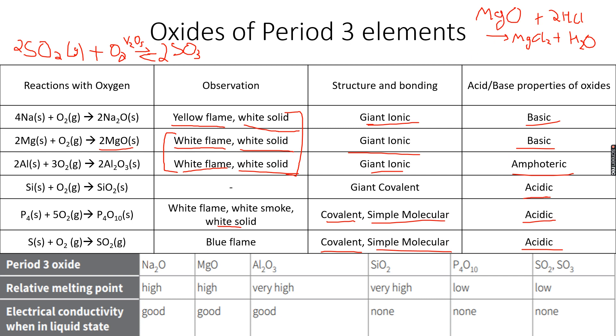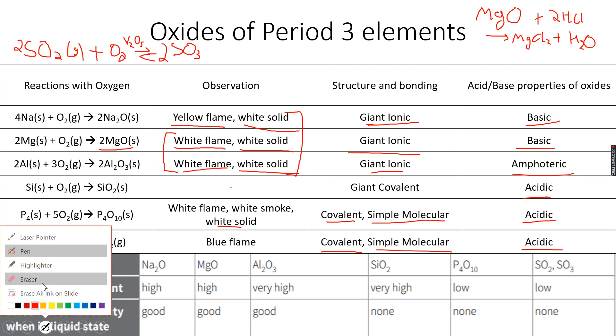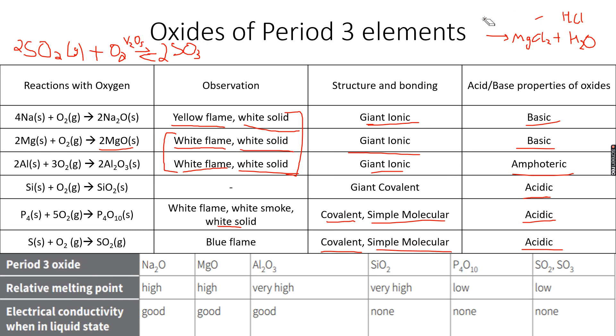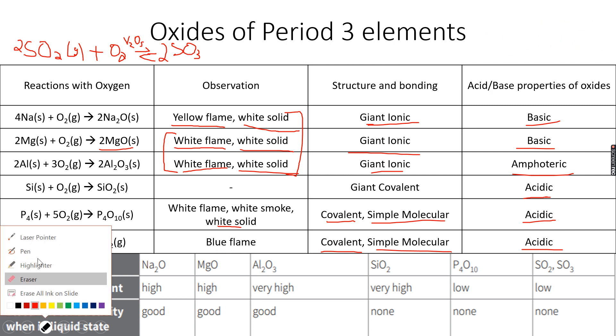Now Al2O3, we'll come to Al2O3 in the end because it's more complex. Al2O3 is more complex because it can act as an acid as well as a base.